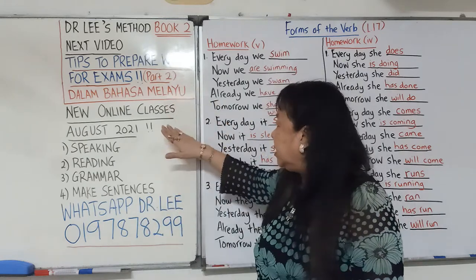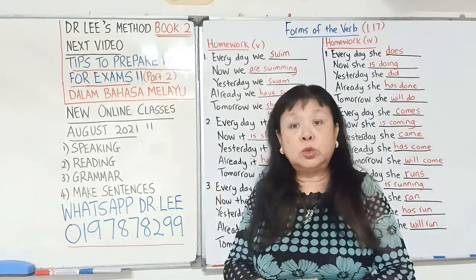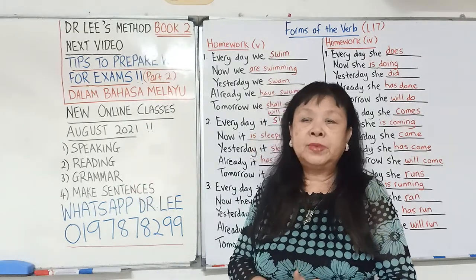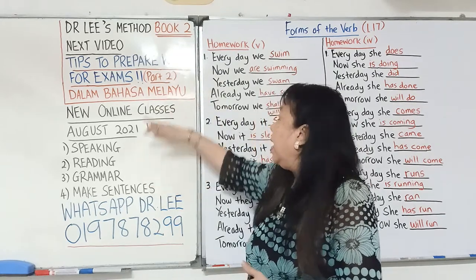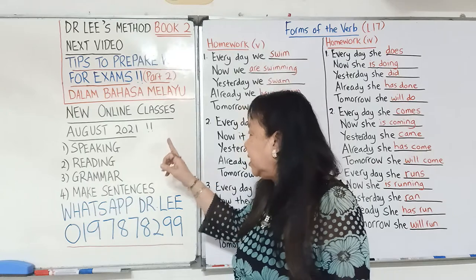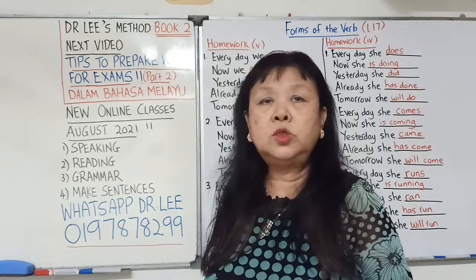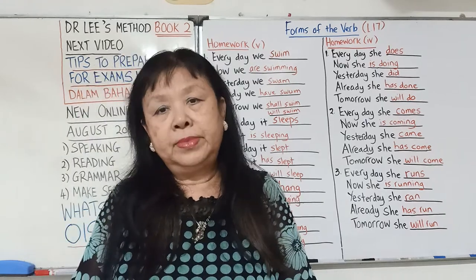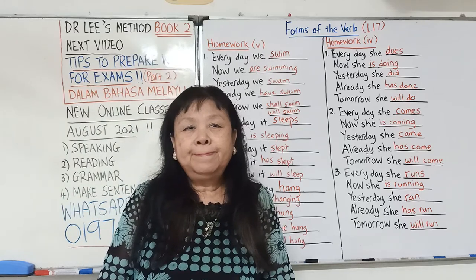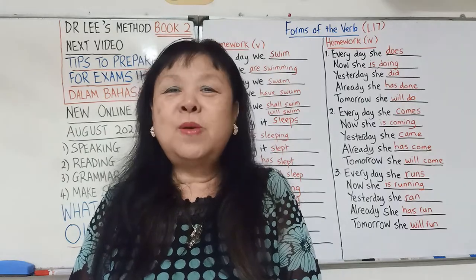这个是如何准备好一个考试。这个月我有开这些班，online的网课：speaking、reading、grammar、make sentences做造句。这个月本来就有两班，一班是reading加grammar，另一班只是grammar。如果你要参加这个课程，或者Book 1第一本书你要买，请你WhatsApp给我：019-7878-299。当印书公司开了，我给它印了，我就会联络你。OK，希望大家喜欢我的课，请给我一个like、share和subscribe，我们下一个video见。